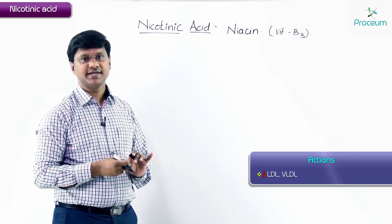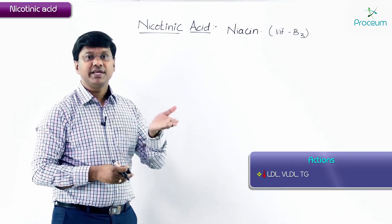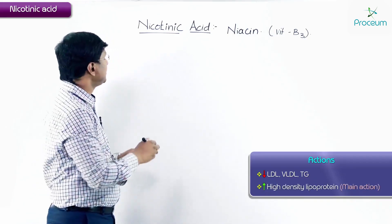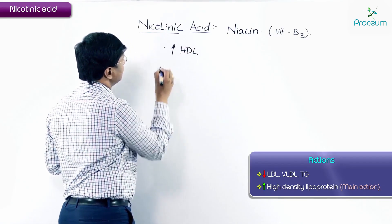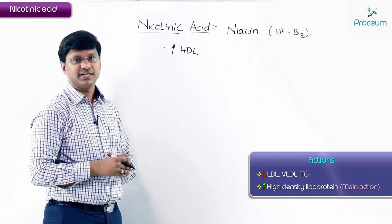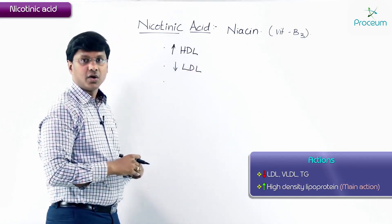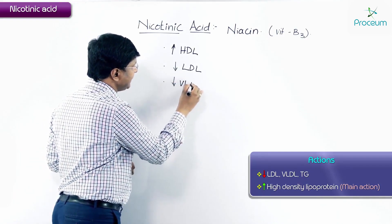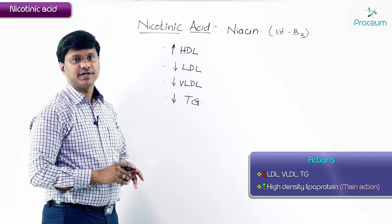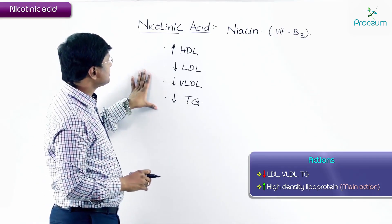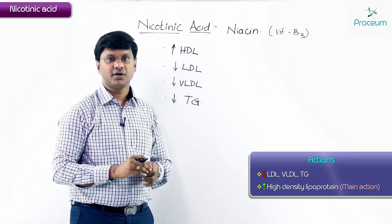What nicotinic acid will do is decrease the LDL cholesterol, VLDL, and triglycerides. But the main action of niacin or nicotinic acid is to increase the HDL cholesterol. So the main action is to increase the HDL cholesterol, along with decreasing LDL, VLDL, and triglycerides.